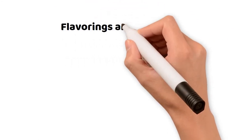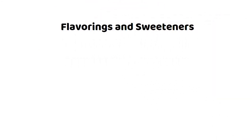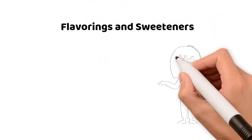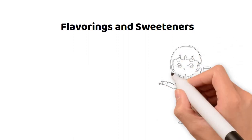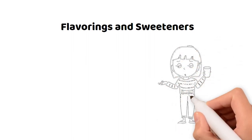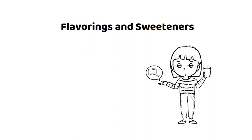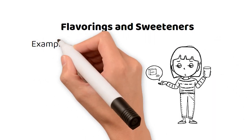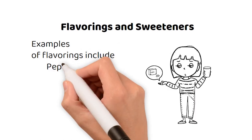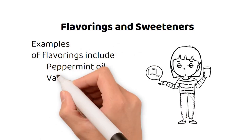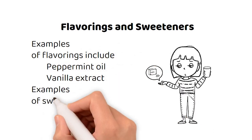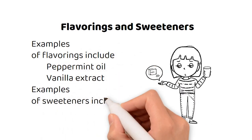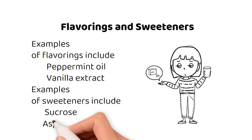Flavorings and sweeteners are used to mask the unpleasant taste of some medications or to make them more palatable. Examples of flavorings include peppermint oil and vanillin extract, while examples of sweeteners include sucrose and aspartame.